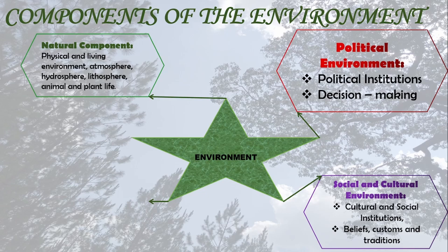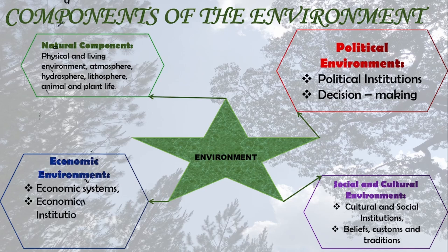Then the last component is the economic environment. Here we are looking at the economic systems, economic institutions, and the rural and urban landscapes. Some specific things include industries, technologies that are coming up, agriculture, trade, markets, and tourism. We also talk about financial institutions like banks, insurance companies, and investment firms.